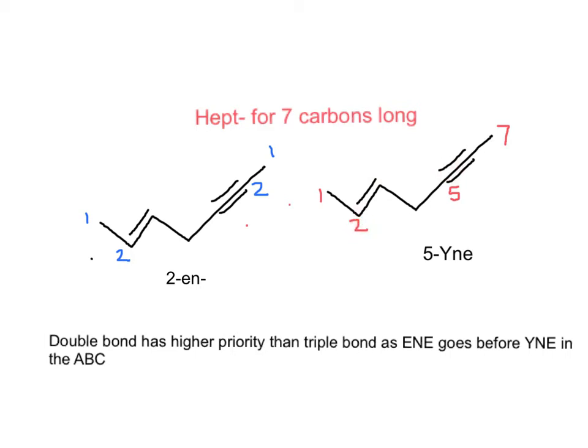So we will find 2-en, establishing the position of the double bond, and 5-yne, establishing the position of the triple bond. And this is a hept because the molecule contains 7 carbons.